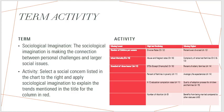This next slide covers sociological imagination, a very important concept in sociology. Sociological imagination is when someone makes a connection between personal challenges, their biography, and a larger social issue — connecting the micro and macro level of analysis. You connect your biography and the historical events that have occurred or are currently occurring as you make these observations, which are typically trends happening at the macro level.